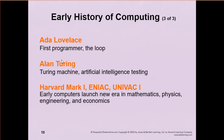Ada Lovelace is considered the first programmer — she developed the concept of a loop. If you've heard of the poet Lord Byron, Ada Lovelace was his daughter. Alan Turing developed the idea of a stored program, which is what the Turing machine is based on — we'll spend a week talking about that. It's the basis for all modern computers in terms of how they process instructions and store data. And then the Harvard Mark I, ENIAC, and UNIVAC I were the first early computers.